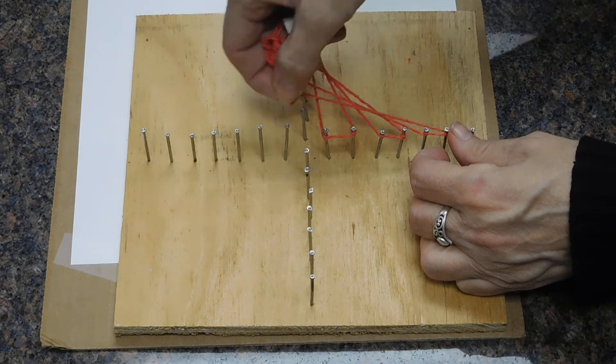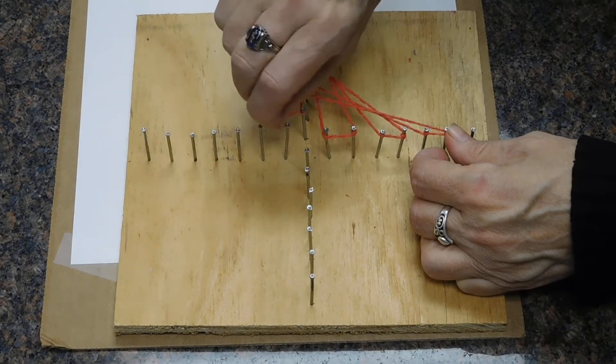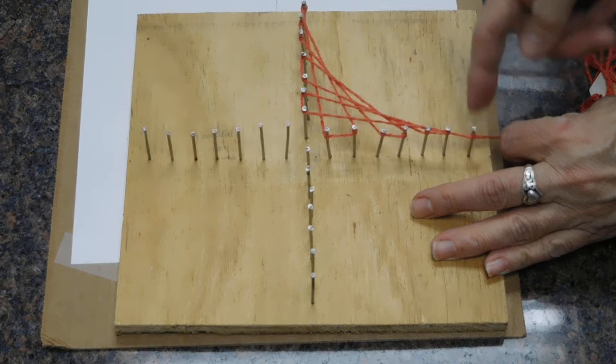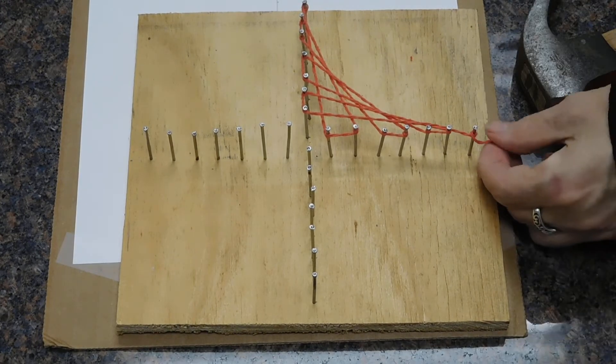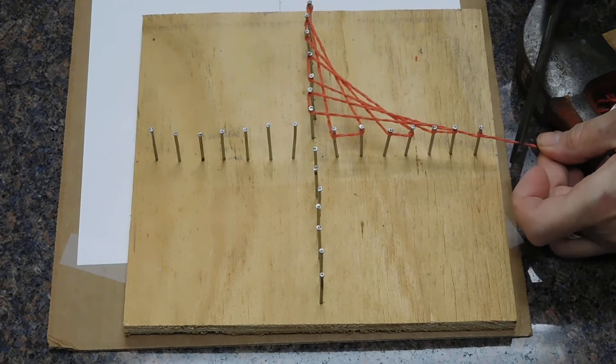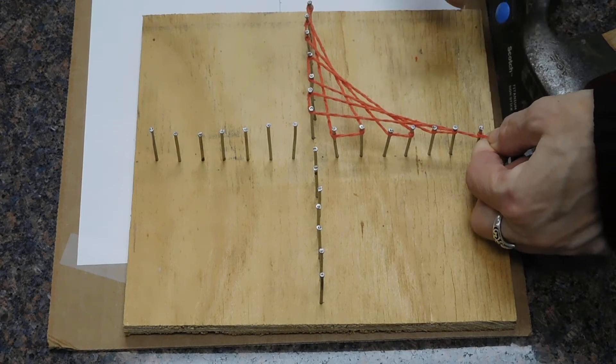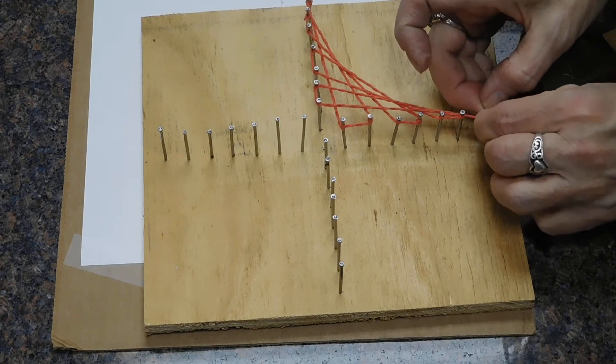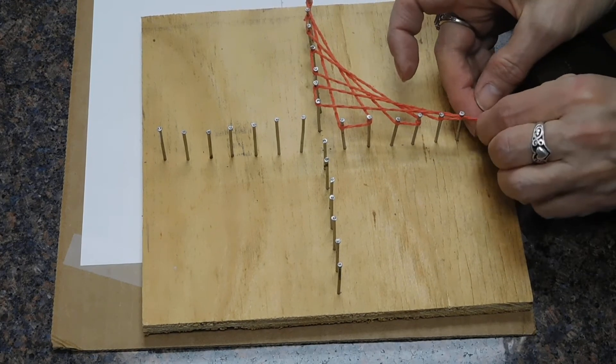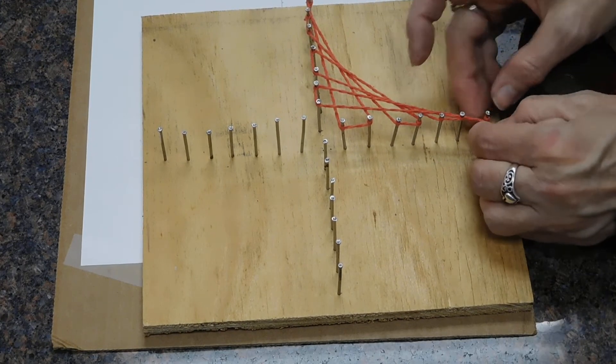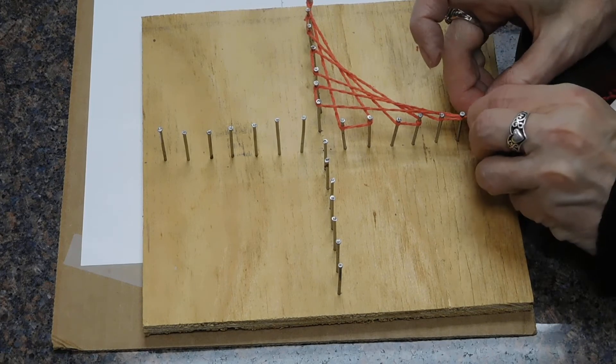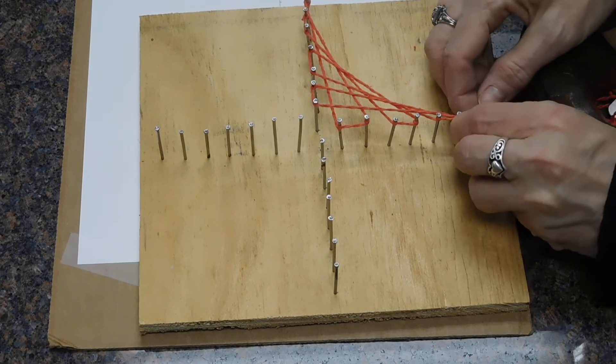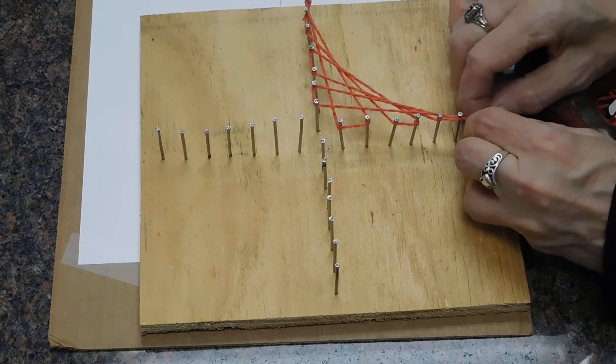We're going to go over, and then over again. Same thing, down to that one, and over to the last one. And we've created our curve. I'm going to finish that off by trimming that one, going around one more time. You can attach it by tying a knot, or gluing it, or like I'm doing, just a little dab of tape to hold it in place.